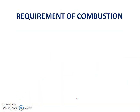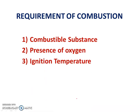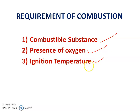Now, the requirements of combustion. First, there should be a combustible substance. Second, there must be a presence of oxygen. Third, the ignition temperature must be reached. Without a combustible substance, you cannot perform combustion. Oxygen is very necessary. Ignition temperature is the lowest temperature at which a substance catches fire. These three conditions are essential for combustion.